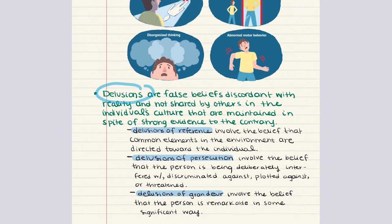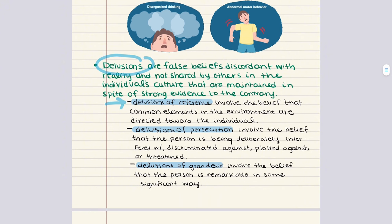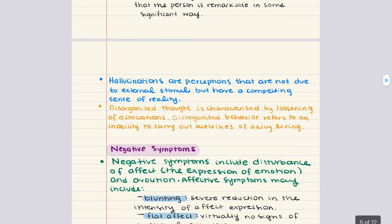Key positive symptoms include delusions — false beliefs that conflict with reality, not shared by others in the same cultural context, and often maintained despite contradictory evidence. Examples include delusions of reference, believing mundane occurrences are directed at oneself; delusions of persecution, the belief that one is being deliberately interfered with or plotted against; delusions of grandeur, believing oneself to be remarkable in some significant way; and thought broadcasting, believing one's thoughts are being broadcast externally, as well as thought withdrawal or thought insertion. Another key positive symptom is hallucinations — perceptions without an external stimulus that seem very real. Auditory hallucinations are the most common, but visual hallucinations also occur.